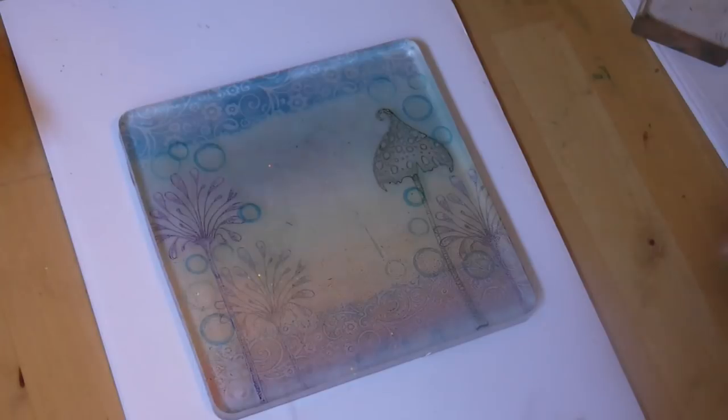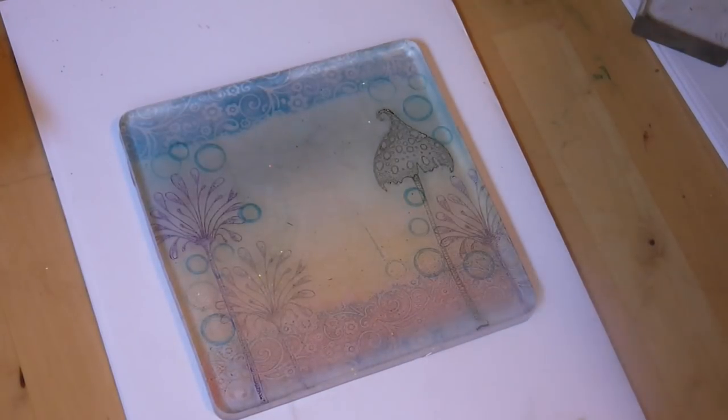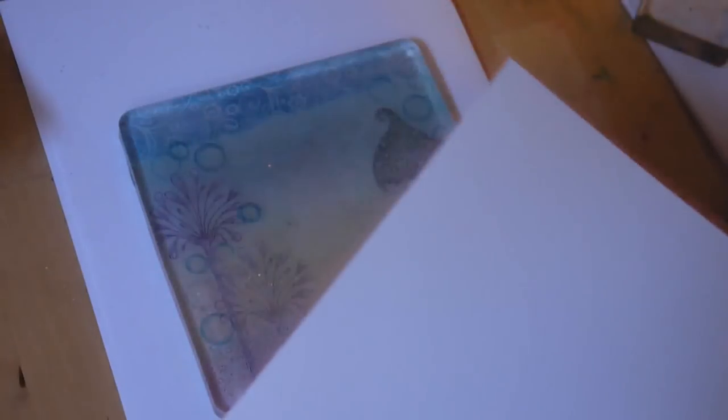Moving on to the matte white card, we're just going to pop that down over the top. Give that a really good smooth down, and hopefully we'll have a really lovely background that we can start stamping the silhouettes on top.